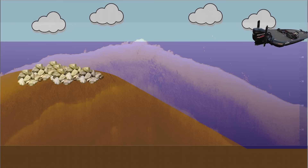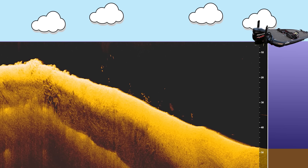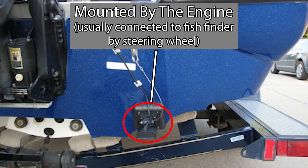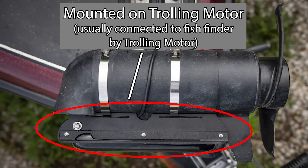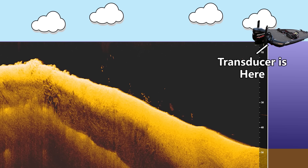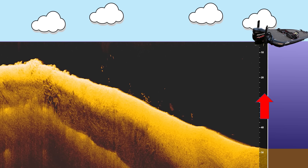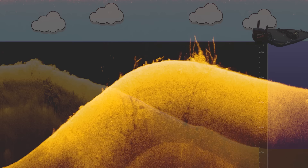First, let's orient ourselves to where this image is in relation to your boat. The image originates from your transducer, which is usually mounted either in the back of the boat by the engine or on the bottom of your trolling motor. The fish finder generates the image by sending a sonar wave from the base of the transducer down to the bottom of the lake, which bounces back up. Using math and technology, the fish finder determines depth by measuring how long the sonar beam takes to travel down and back.